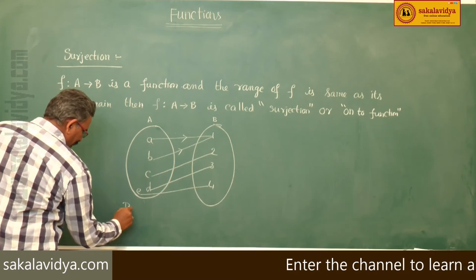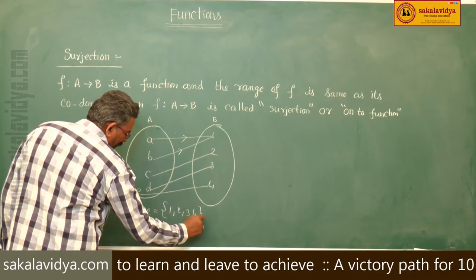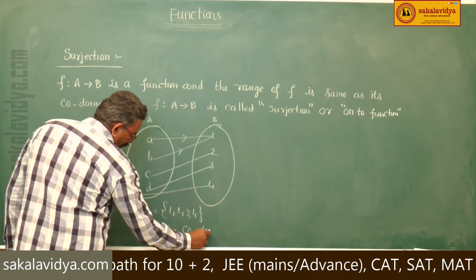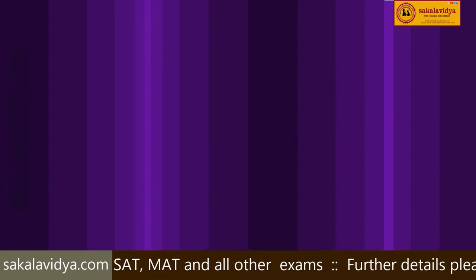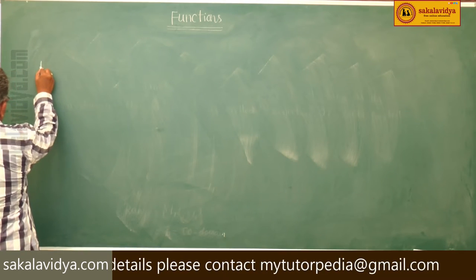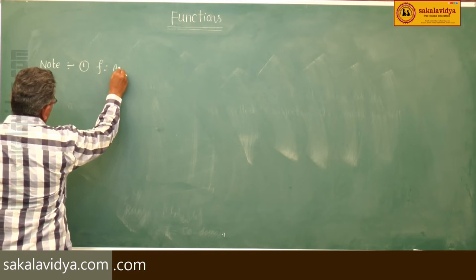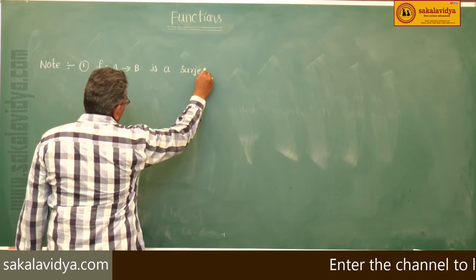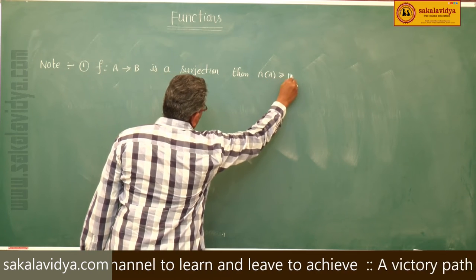In this case, the range is {1, 2, 3, 4}, which is nothing but B, which is equal to the co-domain. So this function is called a surjection. Note: if f maps A to B is a surjection, then n(A) is greater than or equal to n(B).